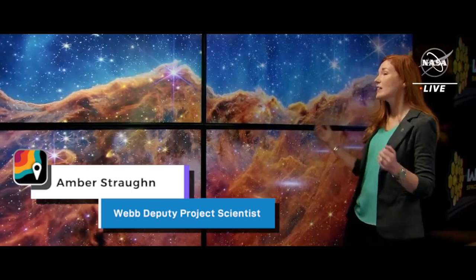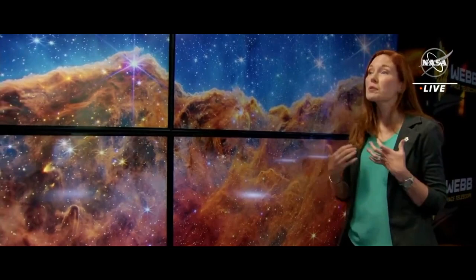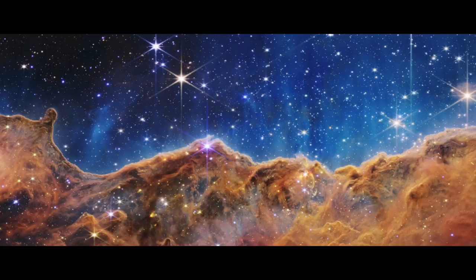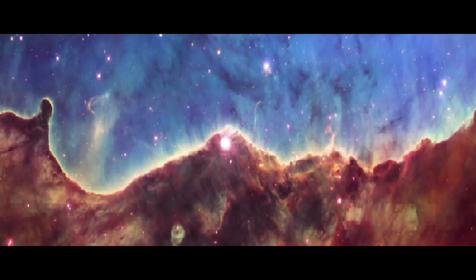Every dot of light we see here is an individual star, not unlike our sun. And many of these likely also have planets. And it just reminds me that our sun and our planets and ultimately us were formed out of the same kind of stuff that we see here.